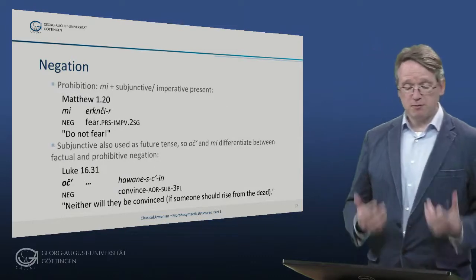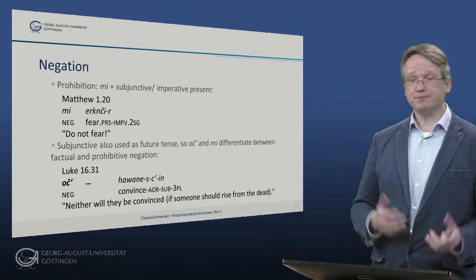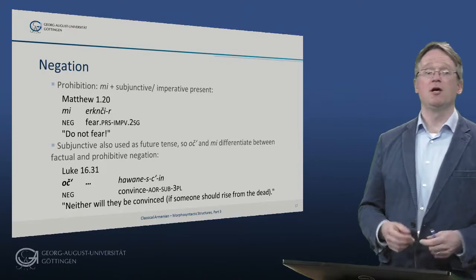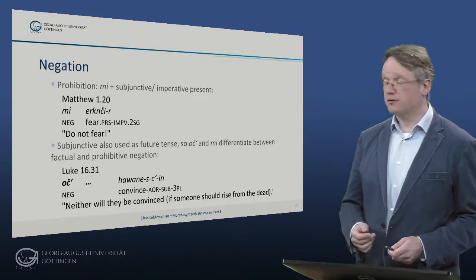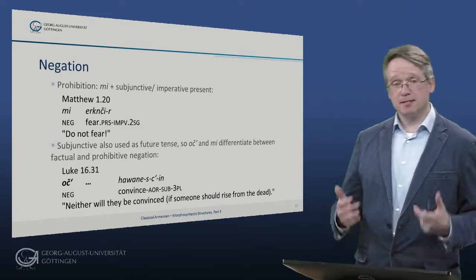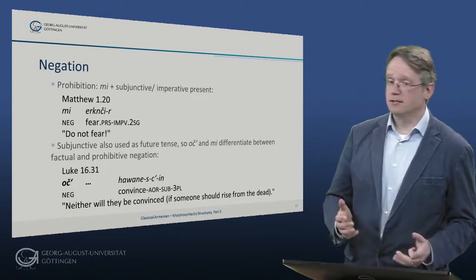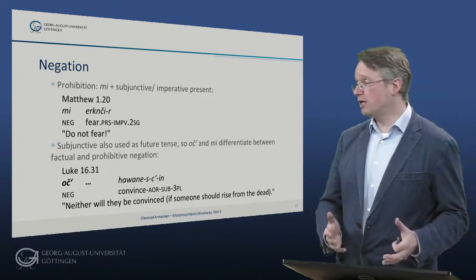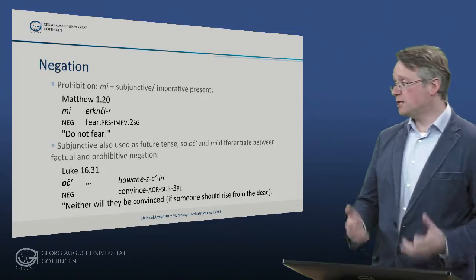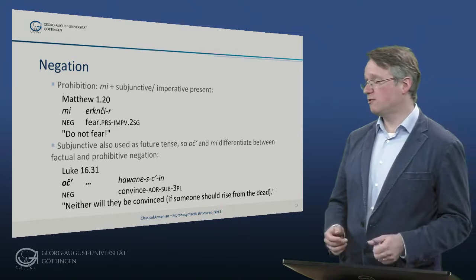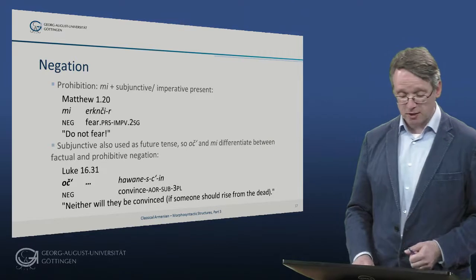For prohibitions, there is 'me,' used together with the subjunctive or the present imperative — only the present imperative is used in this case. Positive imperatives always occur in the aorist. For example: 'me jerkunšir' — do not fear. Importantly, the subjunctive is also used as a future tense, and we can differentiate temporal from modal use by looking at the negation: 'voč' versus 'me.' In Luke 16, 'voč havanist sin' — they will not be convinced — is a factual negation, which would differ if it were 'me,' meaning they shall not be convinced.